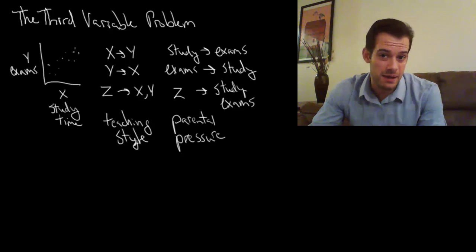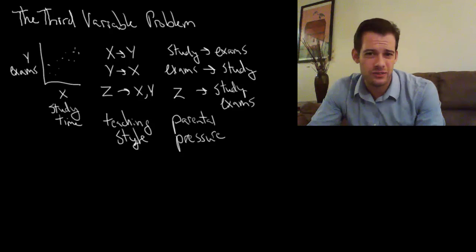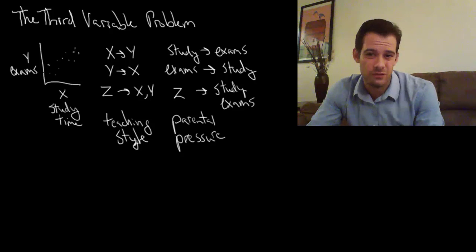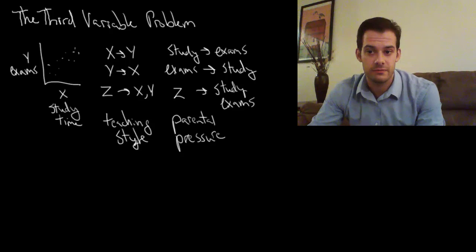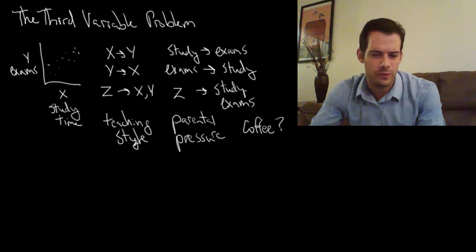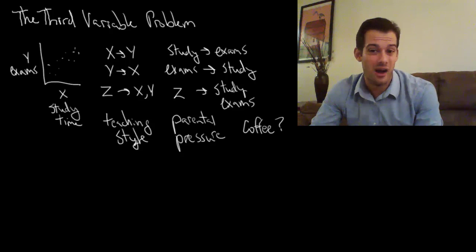And students who have low parental pressure, their parents don't really care how they're doing. Those students don't study as much. And also they're not as motivated to work hard on exams because they don't really care. That's another possible third variable it could be. So it could be parental pressure causing this variation. Or it could be something that we wouldn't think of. Or we wouldn't initially think of. Could it be coffee consumption?